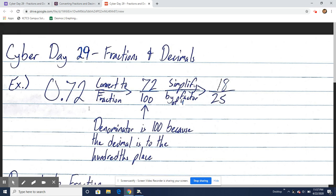So we have 72, that's going to be our numerator. Hundredths, so hundred, is going to be our denominator. Denominator is 100 because the decimal is to the hundredths place. Then we simplify by the greatest common factor. The greatest common factor here is 4. So we're going to divide the numerator and denominator by 4 and get 18 over 25.